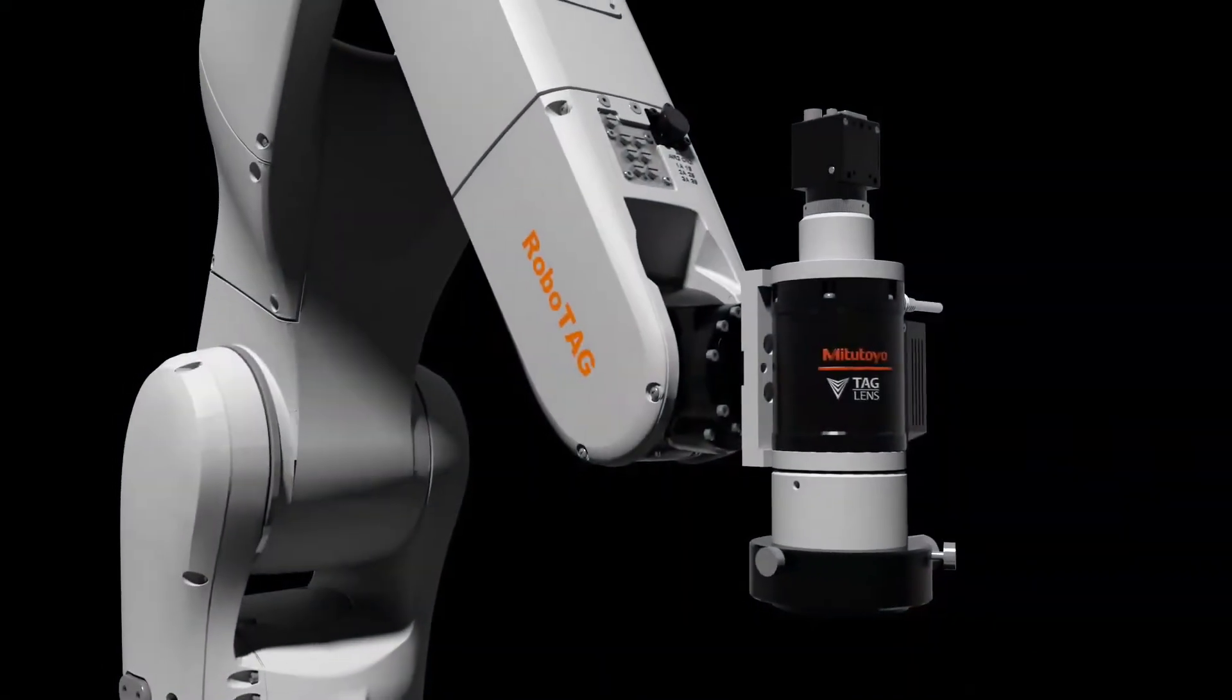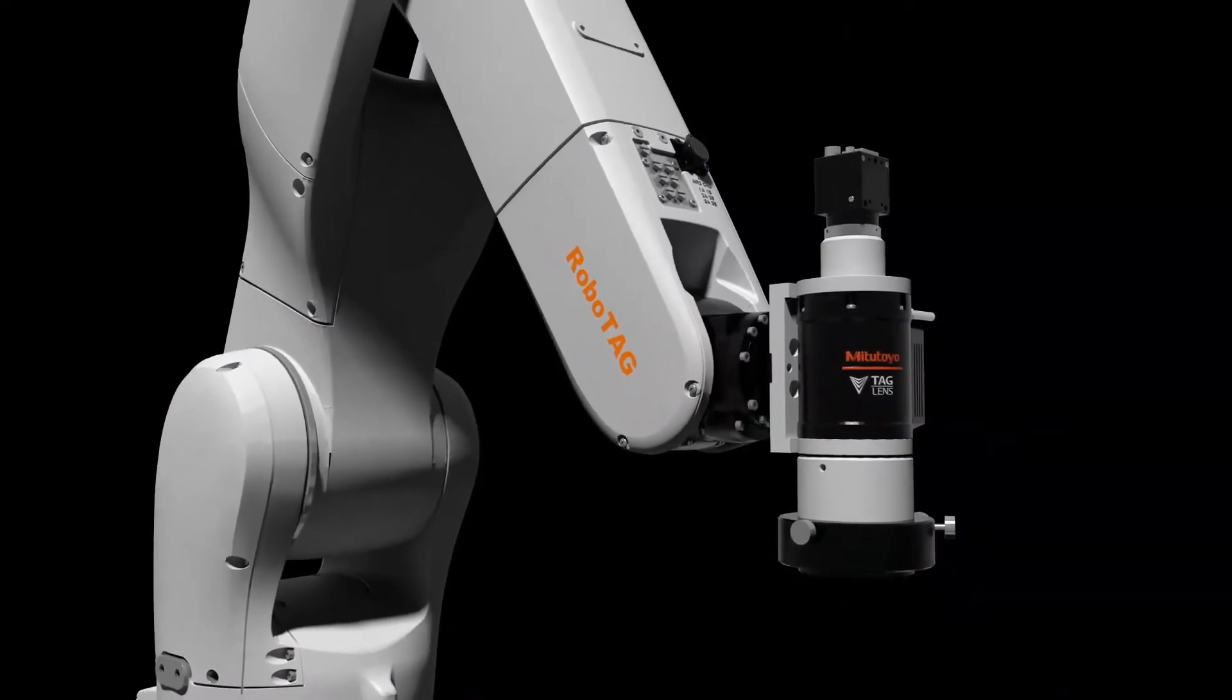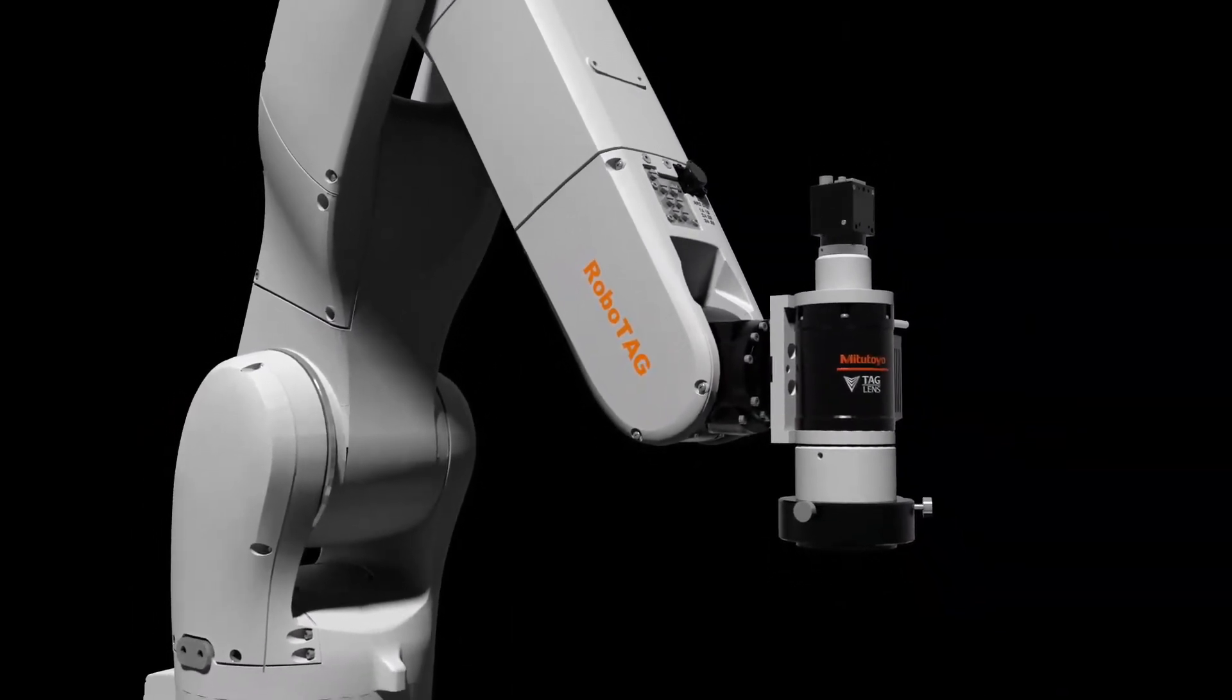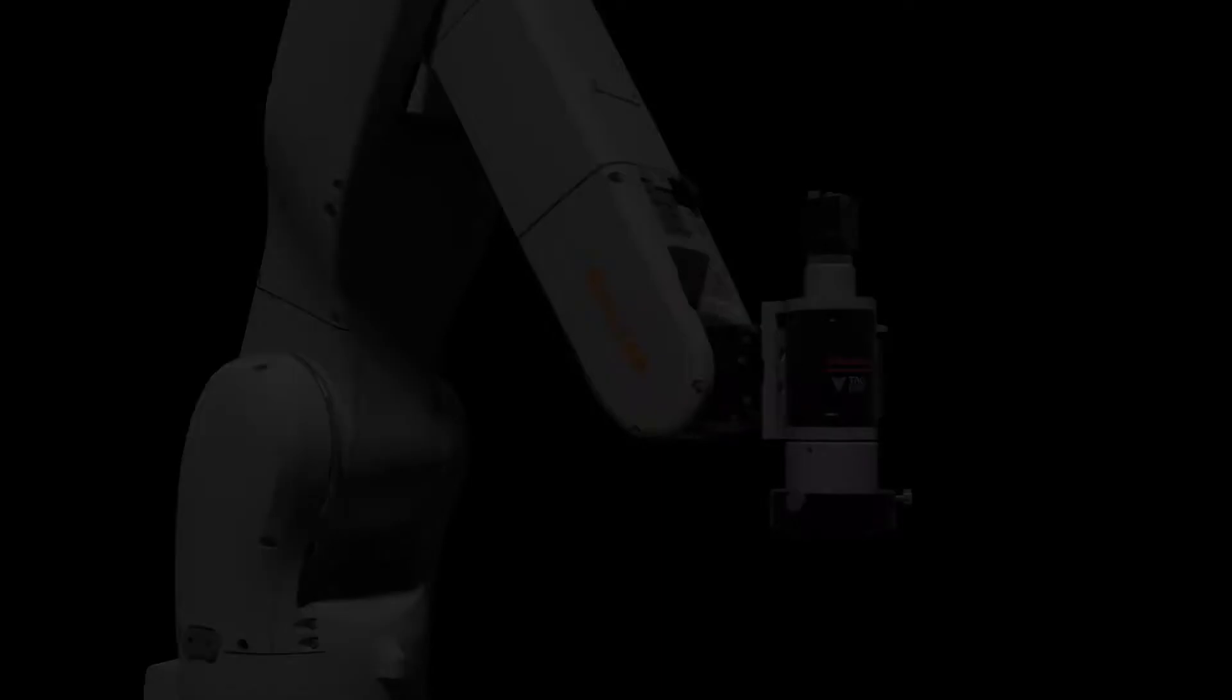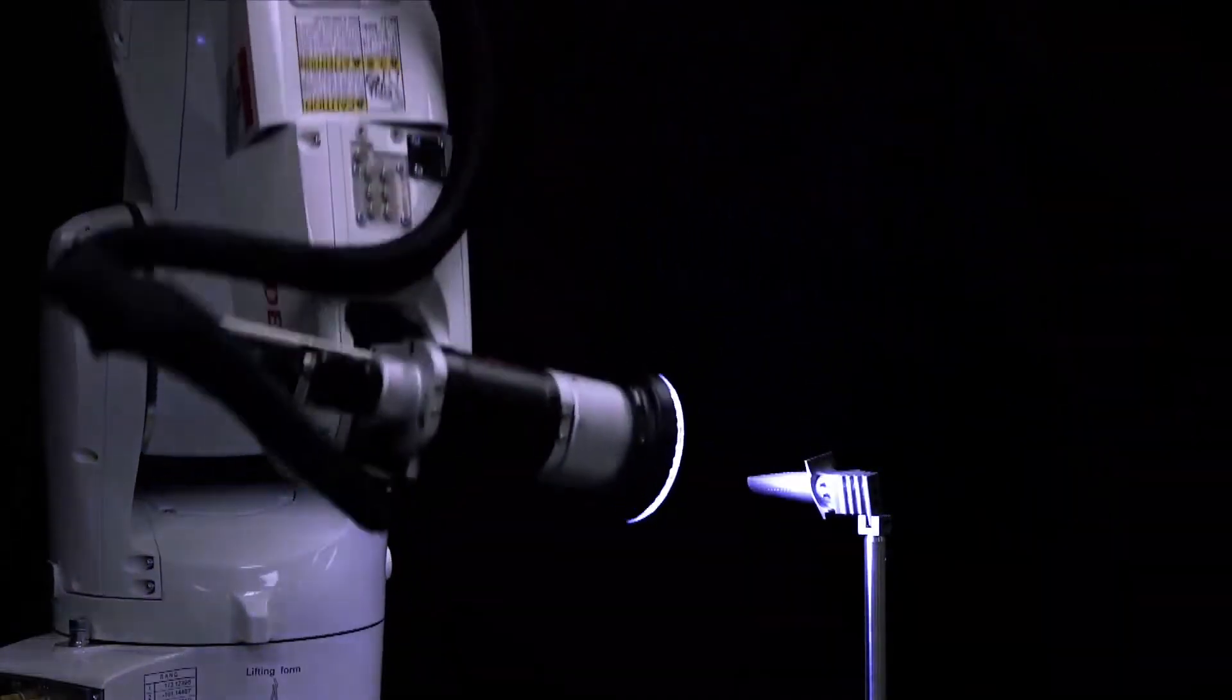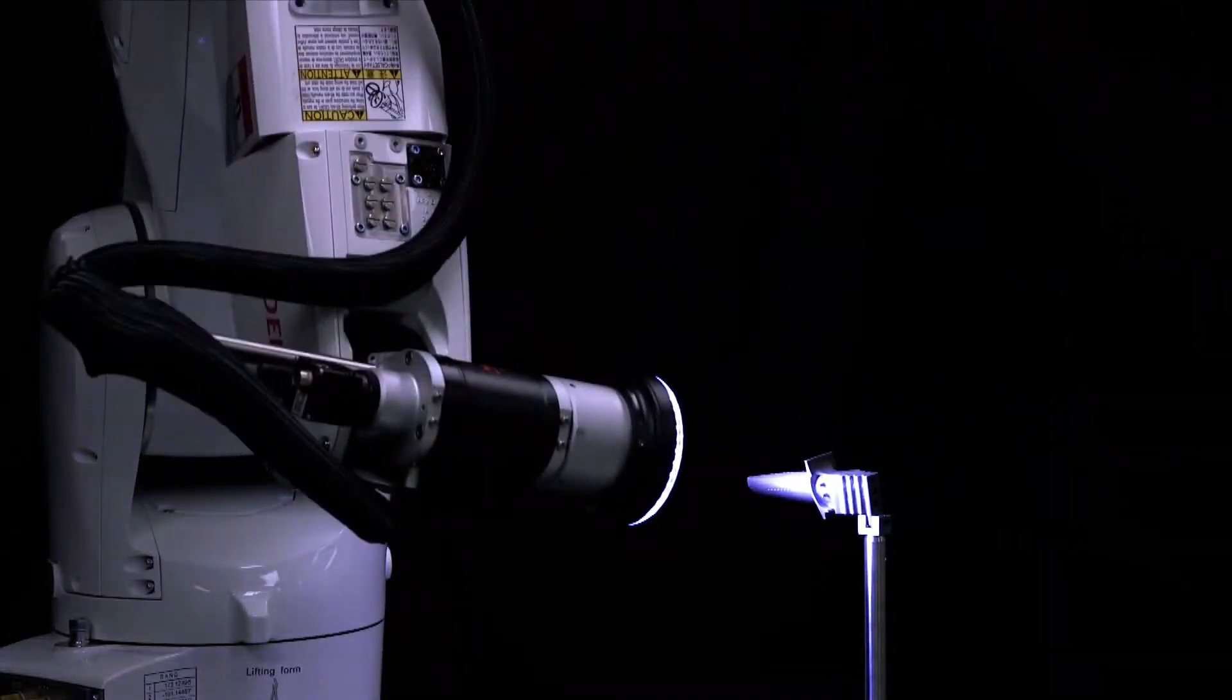The Mitsutoyo RoboTag is an optical sensor designed to mount on robots and allows high-speed acquisition of images from multiple focal lengths. This new technology paves the way towards high-speed inline inspection and measurements.